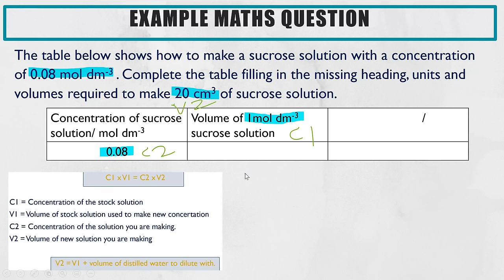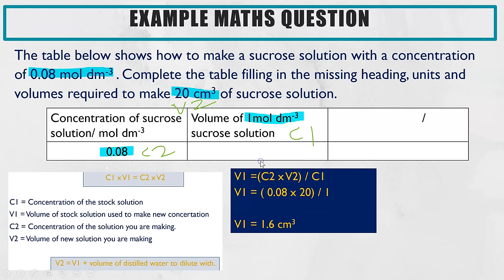Now once you've highlighted all the values then you need to apply your knowledge from the formula to work out which values you've been given. So we have C2, so this is the concentration that we need to make so that's C2. We're told this is the volume that needs to be made so that's V2. And this is actually C1, so volume of the one molar per decimetre cubed sucrose solution. So we need to work out the volume that we need to use but you're told that that is the original solution. So we need to work out V1 for that box. So first thing I've done is rearrange the formula. Then I've slotted in our C2 and V2 and C1 and that is now giving us 1.6 centimetres cubed.